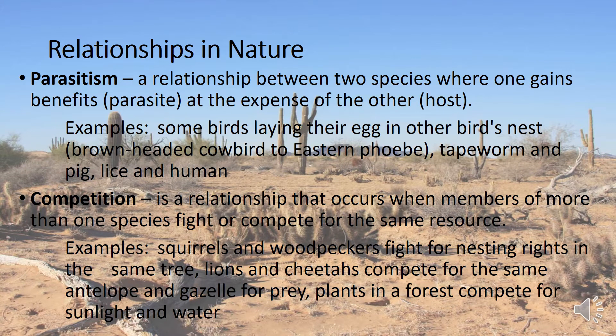Another relationship in nature is parasitism. It is a relationship between two species where one gains benefits at the expense of the other. The one that gains is called the parasite while the other is called the host. Examples of these are birds laying their egg in other birds' nests, like the brown-headed cowbird to the eastern phoebe, and the tapeworm and pig, and lice and humans. Next is competition. This is a relationship that occurs when members of more than one species fight or compete for the same resource. Examples are squirrels and woodpeckers fight for nesting rights in the same tree, lions and cheetahs compete for the same antelope and gazelle for prey, and plants in a forest competing for sunlight and water.